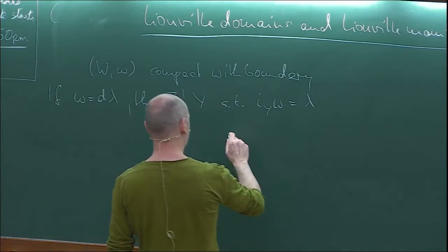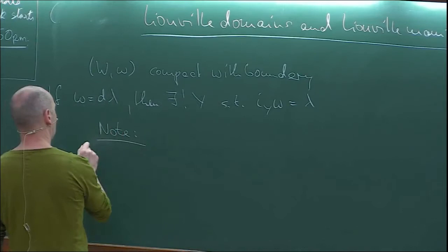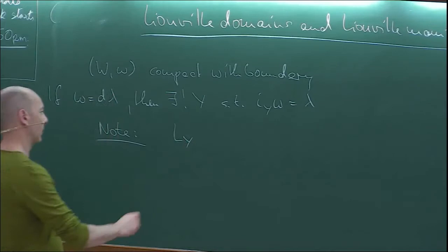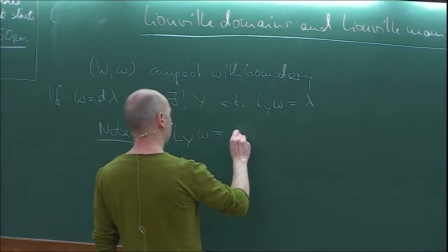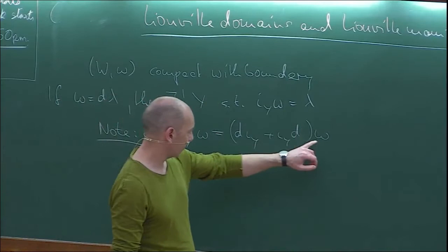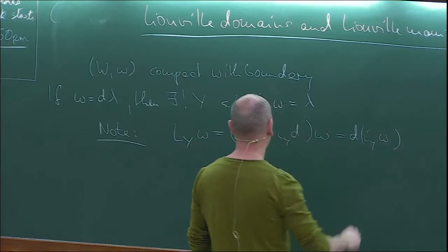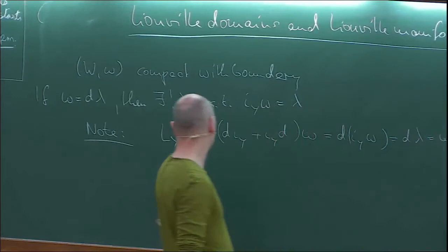If you put these things together, note that if I take the derivative in the direction of the vector field Y of the symplectic form omega, then by Cartan's formula, this is D of the insertion of Y plus the insertion of Y into D of omega. But D omega is zero since omega is closed, so we just get D of i_Y omega. Since i_Y omega was lambda, this is D lambda, which equals omega.